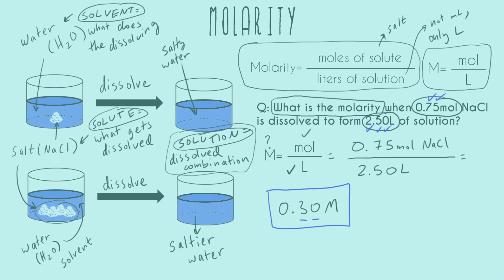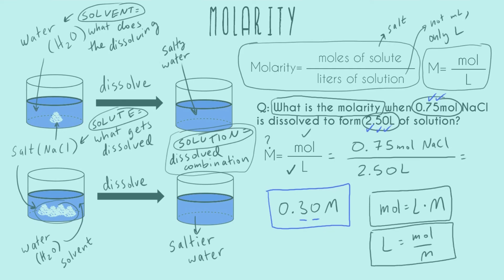Molarity problems do involve algebra sometimes. If we are asked for moles, or if we were asked for liters, we would have to rearrange our equation so that just that variable is by itself. If you're asked for moles, you can do algebra, but the equation eventually rearranges to a specific form. If you're asked for liters, again, you can do the algebra and it rearranges accordingly. I hope you enjoyed this video, and as always, happy studying.